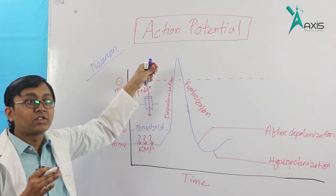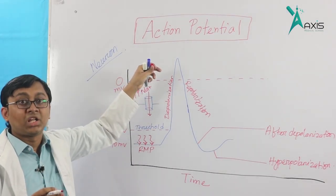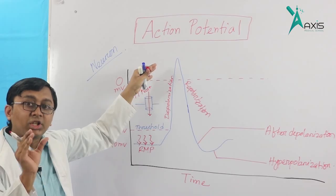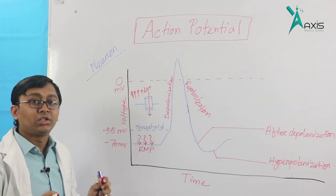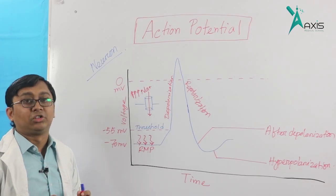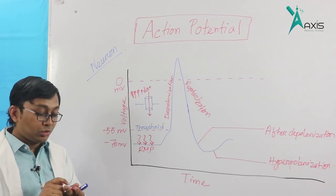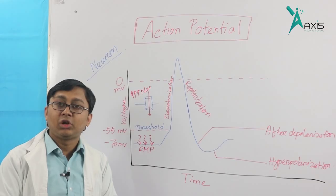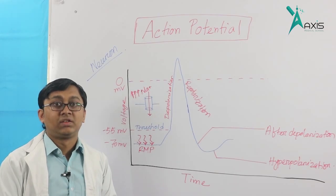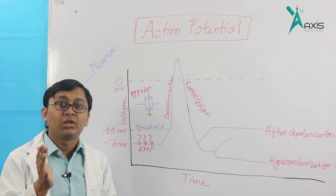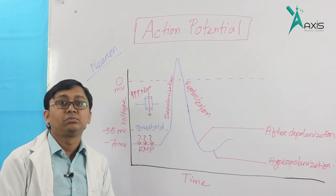Now after the depolarization finishes off, the voltage-gated sodium channel closes. Then the voltage-gated potassium channel opens. According to the law of diffusion, potassium will move out. The voltage-gated sodium channel closes and the voltage-gated potassium channel opens.